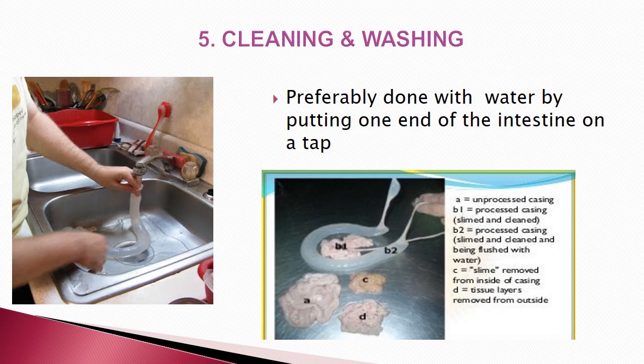After scrapping or sliming, the next step is cleaning and washing. One end of the intestine is sleeved onto a suitable tap and flushed with water to remove all contents inside. It should look very clean and transparent, confirming that it has been properly processed.